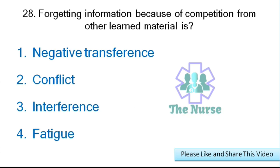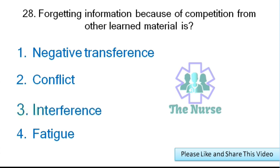Next question: Forgetting information because of competition from other learned material is called what? Options: negative transference, conflict, interference, or fatigue. Correct answer: interference.